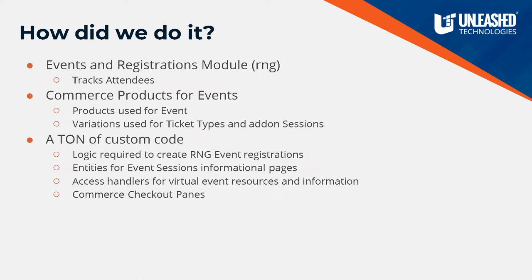There isn't an idea of an event within commerce, and there's no way to register for events natively. So in the implementation, we leveraged the products module — the commerce products module — with a product type for events, and used variations to represent ticket types, letting users register for different tiers of tickets as well as potentially add-on sessions. Because of how commerce works, it works well enough for checkout, but we had to put a ton of custom code to glue together that system with event registrations. That includes updates to the checkout flow, generation of event registrations within the RNG module's entity system once checkout was completed, and populating that with user information.